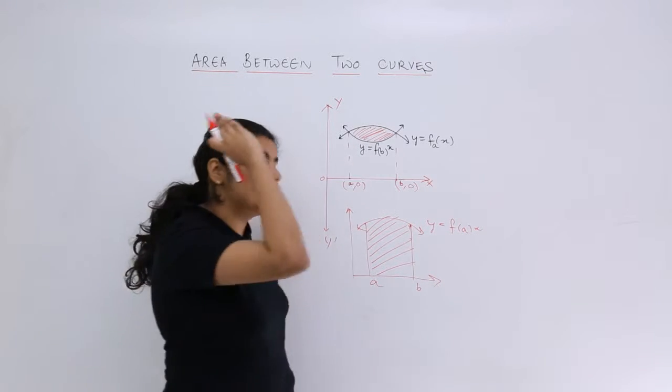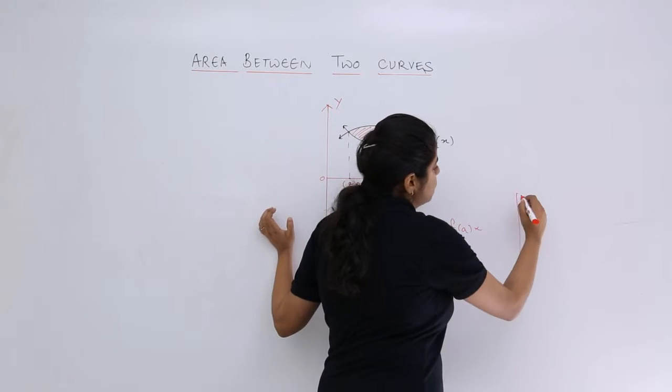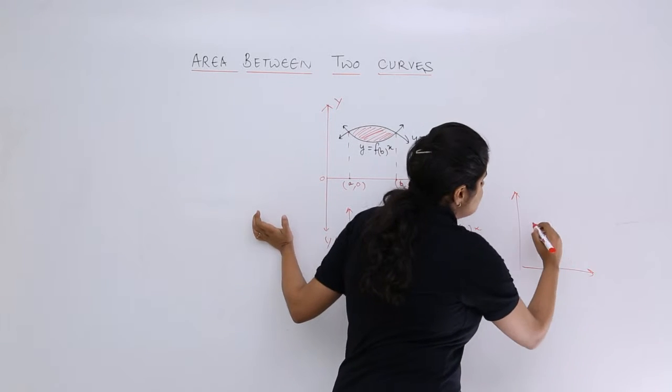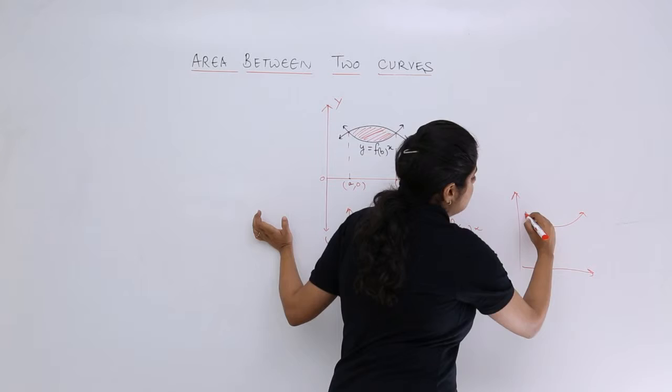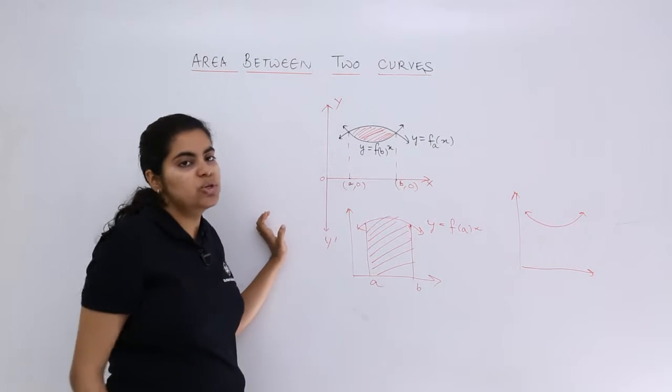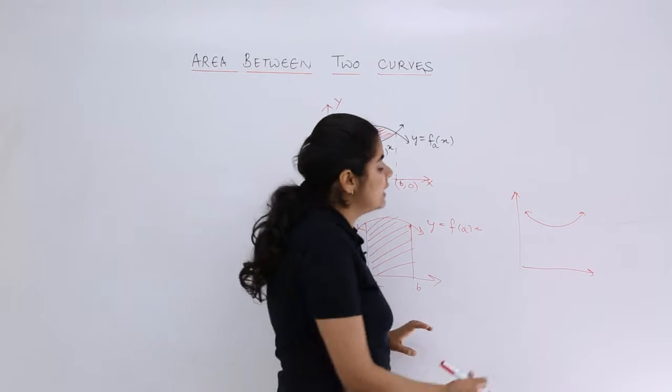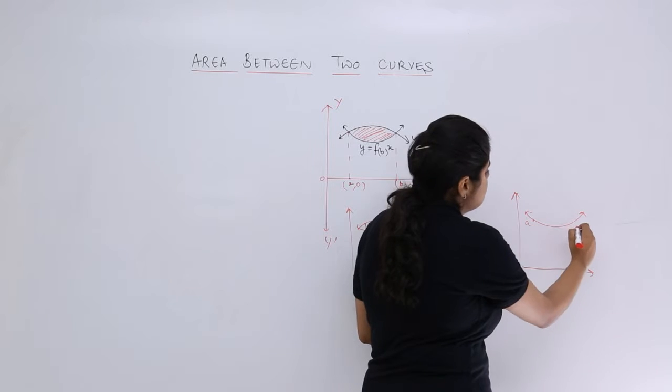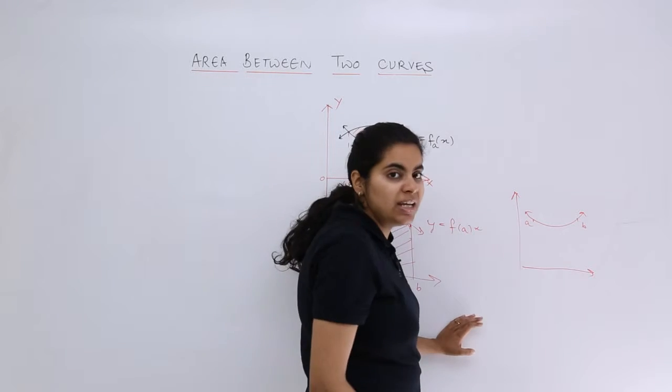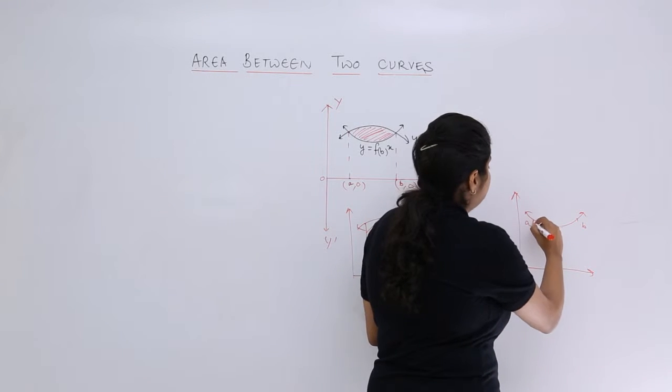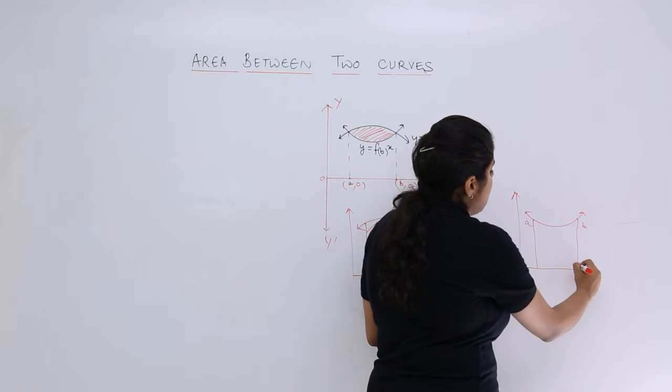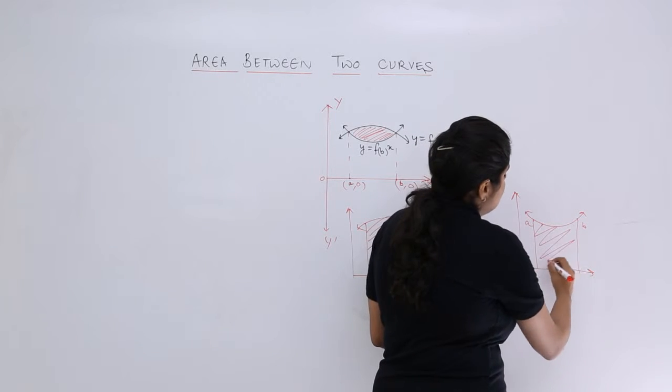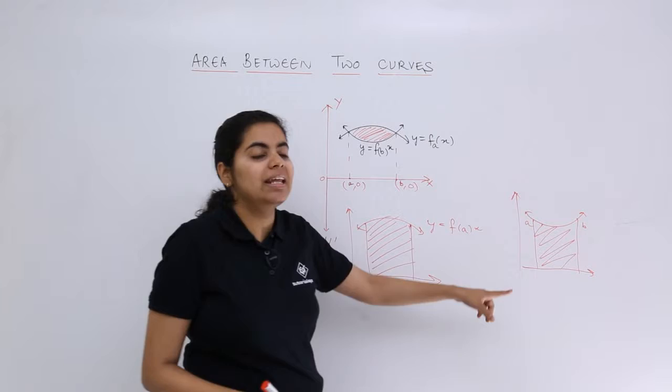Similarly, when I consider the second curve, I see that my second curve is something like this, which is y equals f of bx. Again there are two points: this is point a, this is point b. If I make it perpendicular, I see that I get this integration which will give me area under this curve.